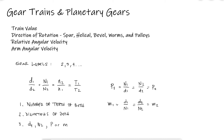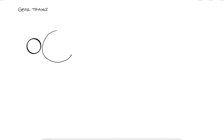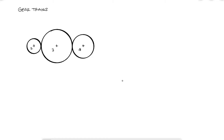Even though the term gear trains technically refers to any gear system that has two or more gears, therefore making every gear system a gear train, we commonly use it to talk about a system where there are three or more gears on the same plane. Regardless of the number of gears, any system that is connected to transmit power from one end to the other will have elements that are driving and elements that are being driven. Notice that I'm using the word elements since you can even have pulleys, for example, besides just gears.